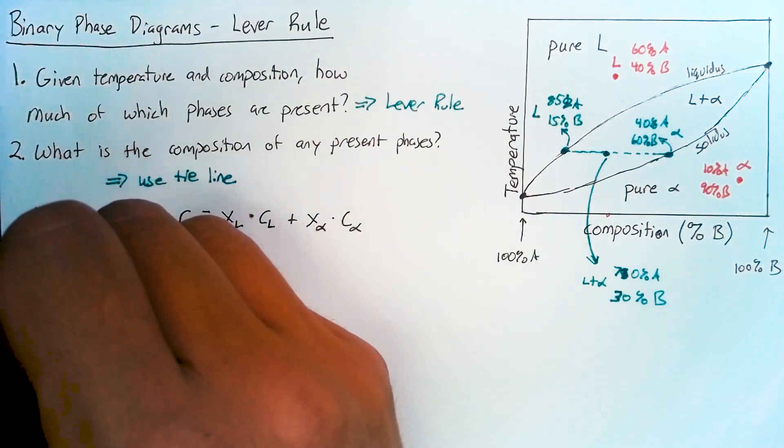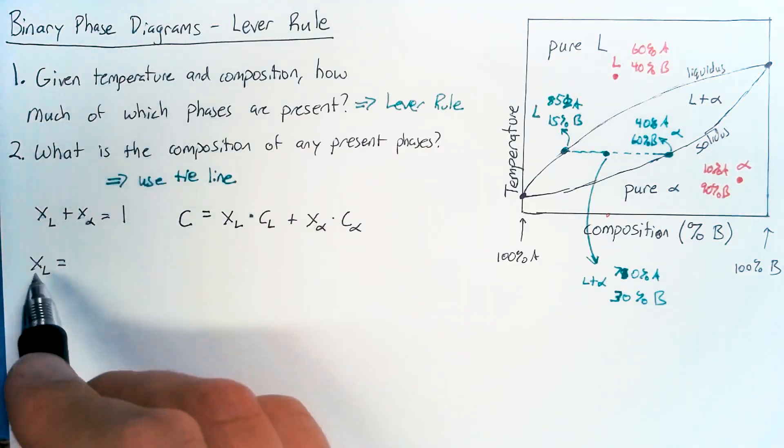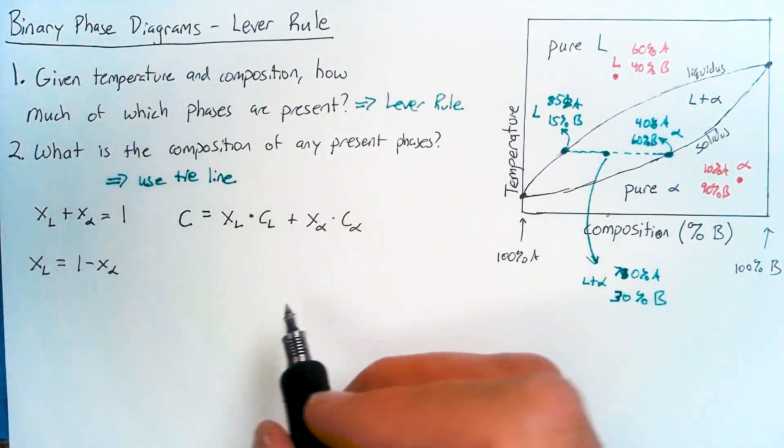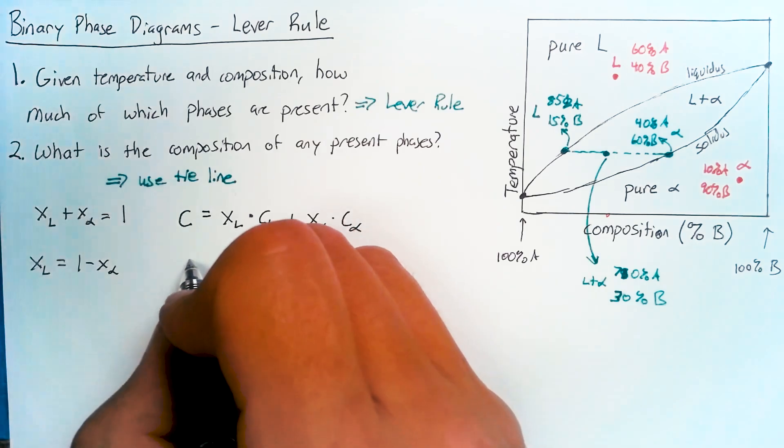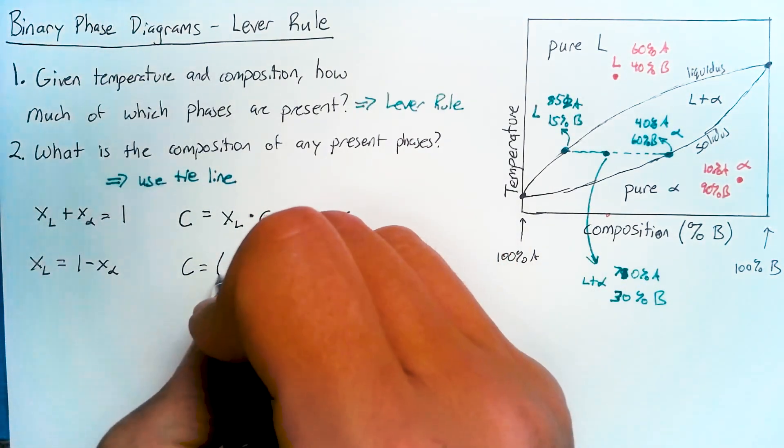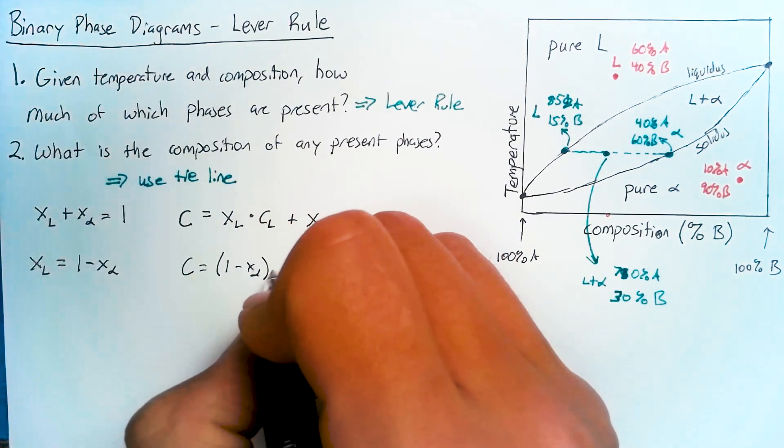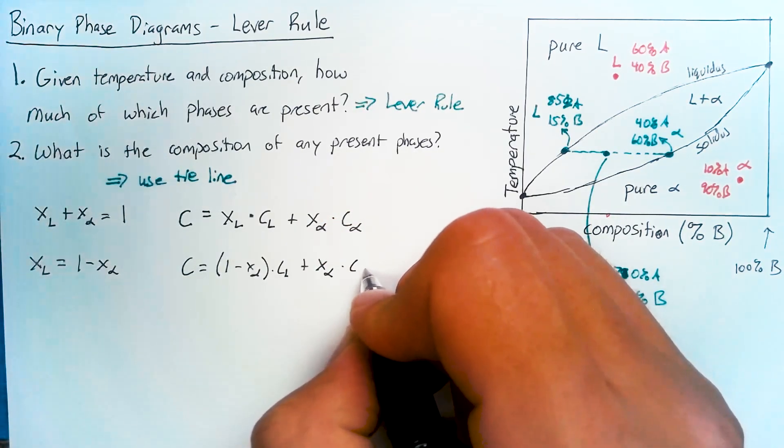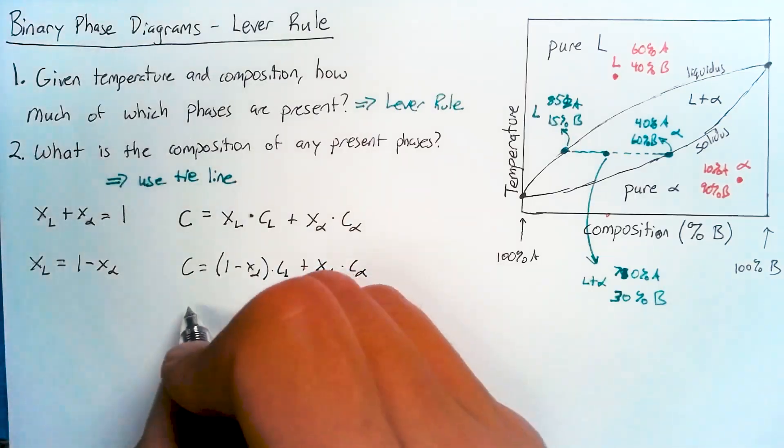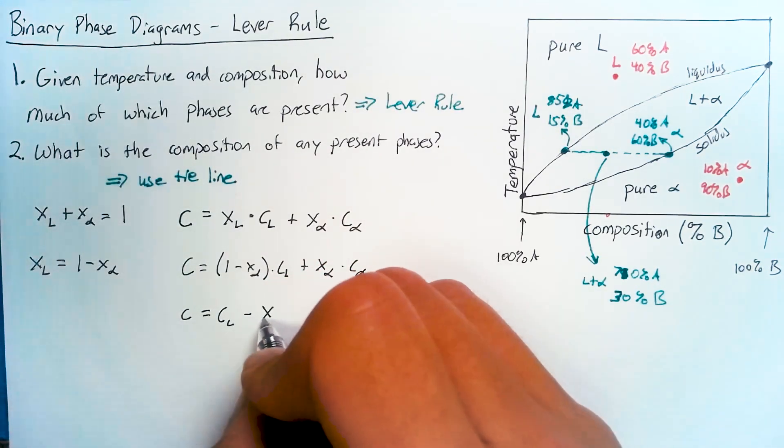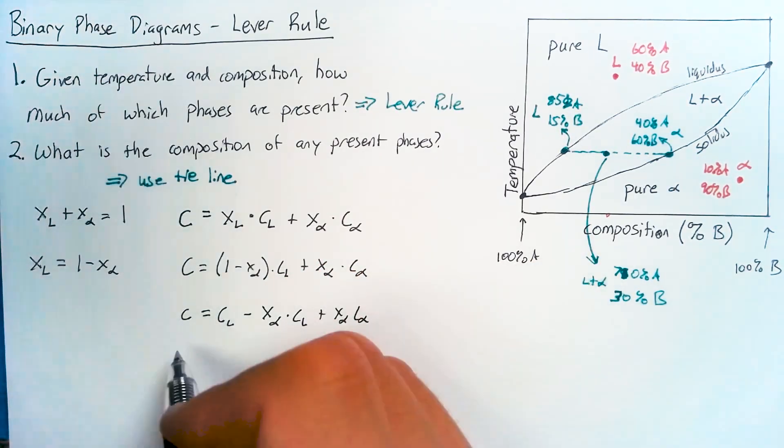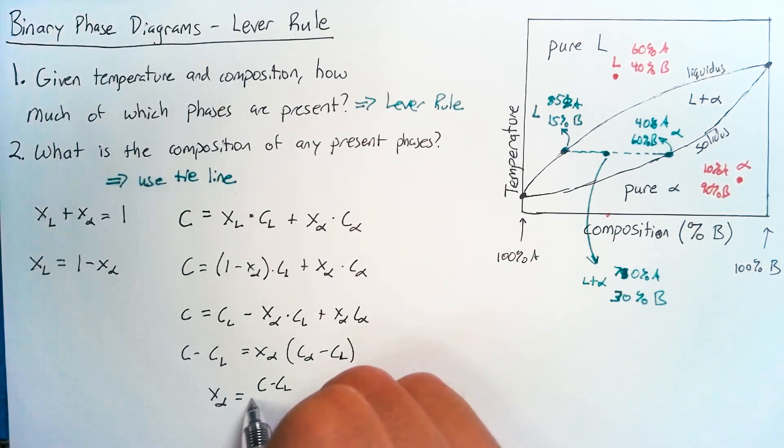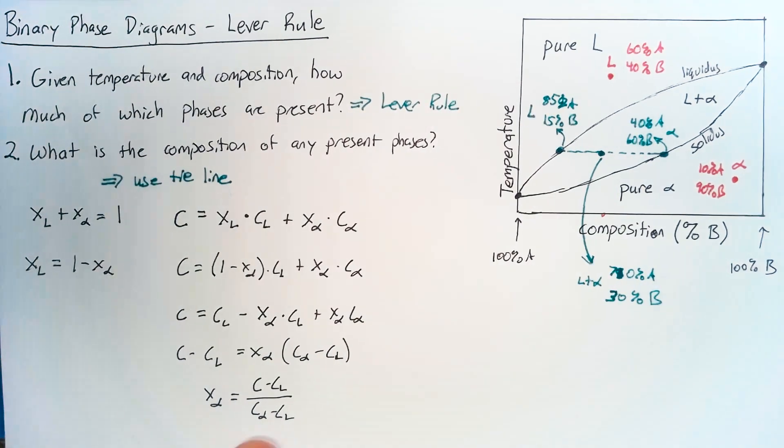Now we can do just a little bit of work over here to solve for the percentage of liquid present. That's just going to be 1 minus x_alpha. Then if we plug that into the other equation, we get that our overall composition is equal to 1 minus x_alpha times C_L plus the percentage of alpha times the composition of alpha. And we'll do just a few more arithmetic steps and end up with the percentage of alpha present.